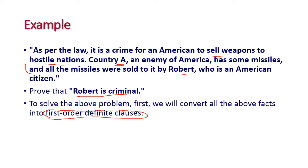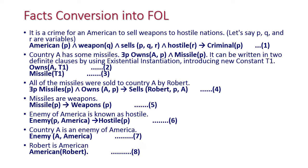We need to convert all the given English statements into first-order logic statements. The first statement: it is a crime for an American to sell weapons to hostile nations. Here we have three variables applied to American, weapon, and hostile nations. That is: American(P) ∧ weapon(Q) ∧ sells(P, Q, R) ∧ hostile(R) → criminal(P). This is the first statement converted into first-order logic form.